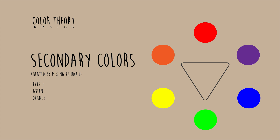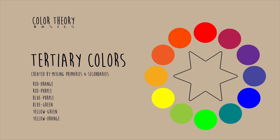Then we move on to tertiary colors. Tertiary colors are created by blending a primary color and a secondary color, so you have things like red-orange, red-purple, blue-purple, blue-green, yellow-green, and yellow-orange.